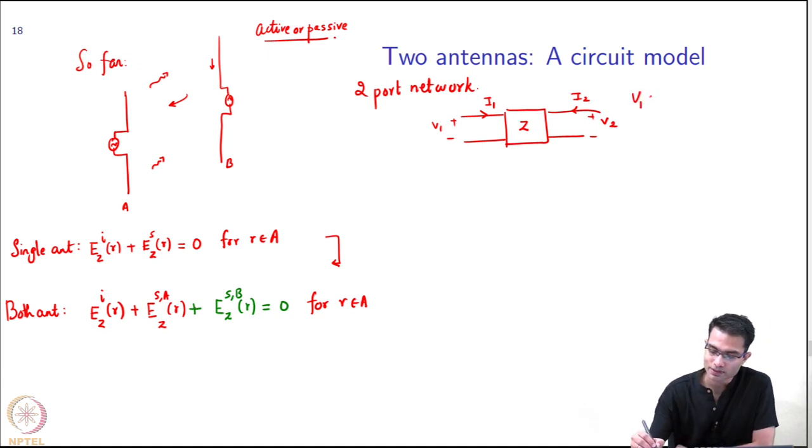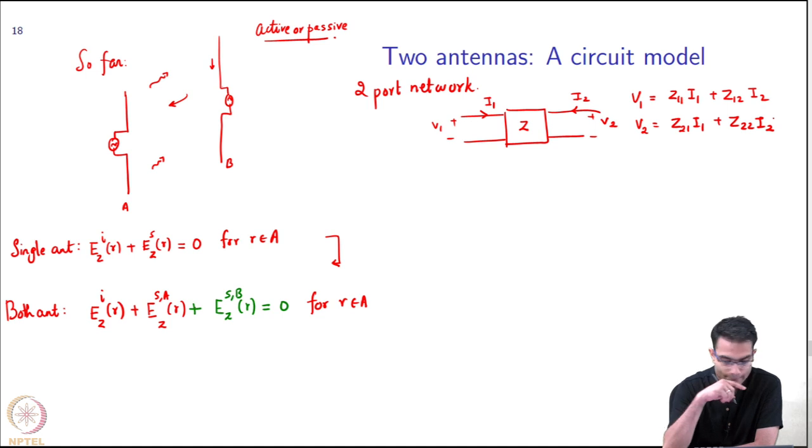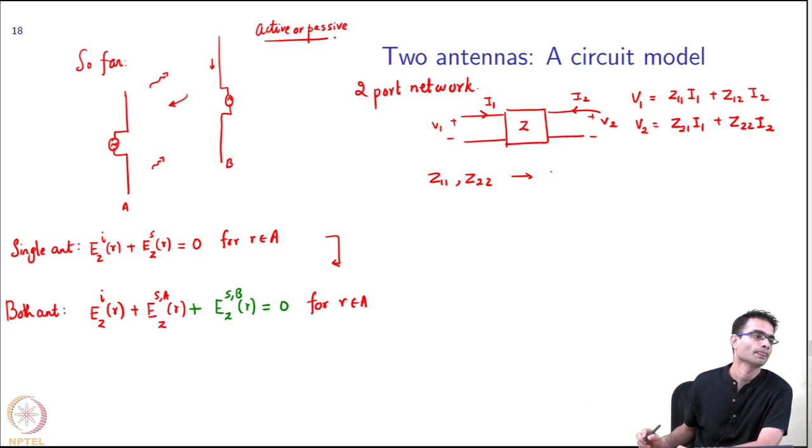This is very standard for electrical engineer. I can write V_1 = Z_11*I_1 + Z_12*I_2, and V_2 = Z_21*I_1 + Z_22*I_2. What are these Z_11 and Z_22? These will be called the self impedance. These are the impedances in the absence of the other antennas.